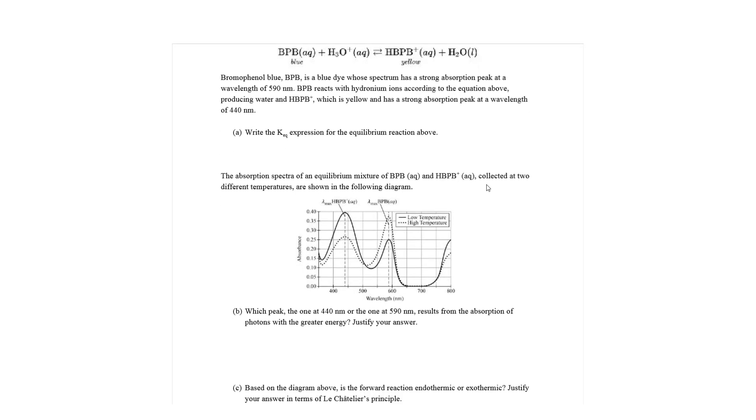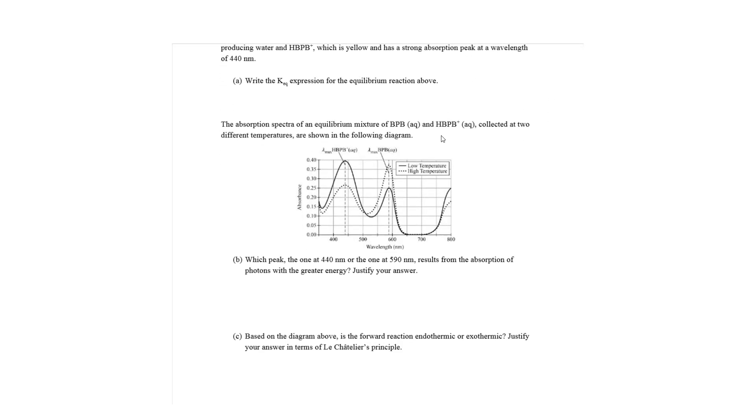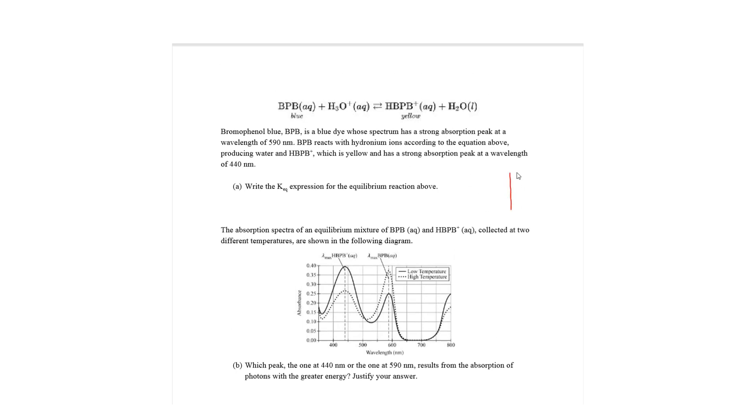So what an absorbance experiment is, is you have a solution of some unknown thing, and you shine some light on it. And these light rays have some incoming intensity, which you know because the machine produces it. That's called I0. However, some of the light will scatter off, and that comes back with intensity I. So what the machine does is it knows how many photons it emits, so it knows its intensity that's emitting, and then it measures the intensity that comes back.